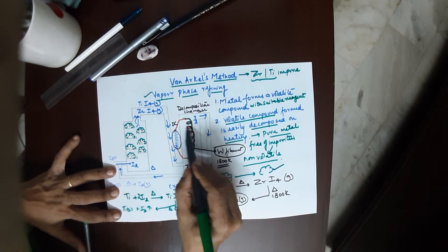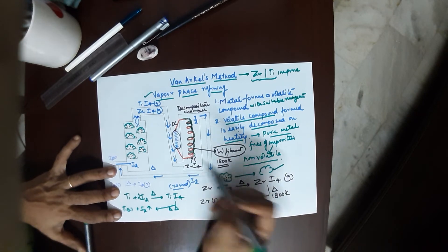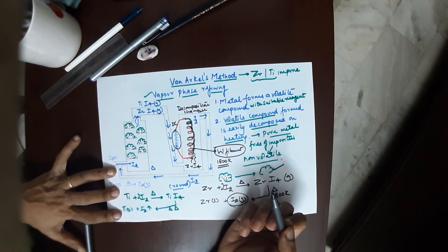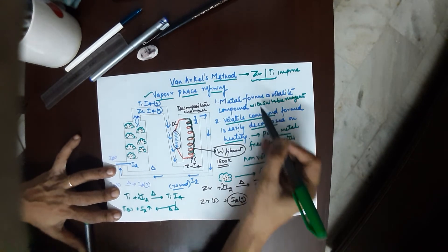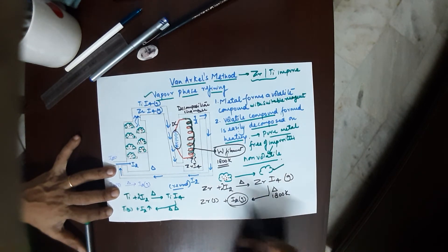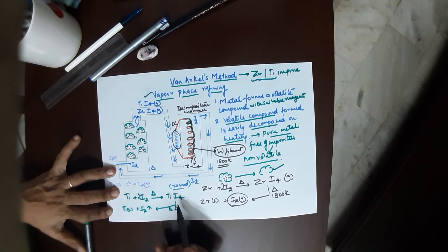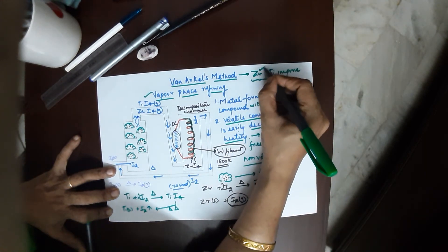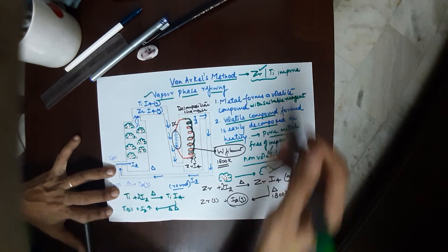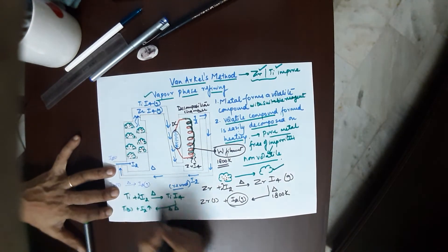What you need to know for these methods is the principle and the chemistry involved. If you are asked for zirconium, please write these reactions. If you are asked for titanium, you're supposed to write these reactions.